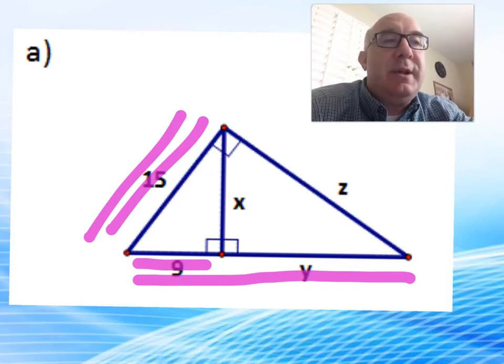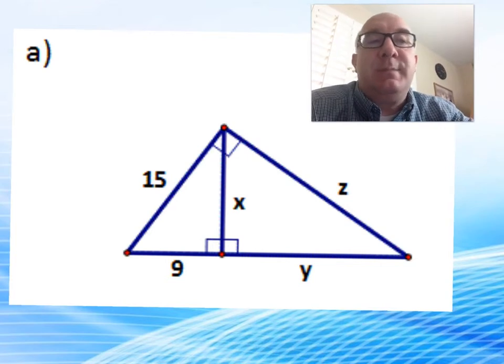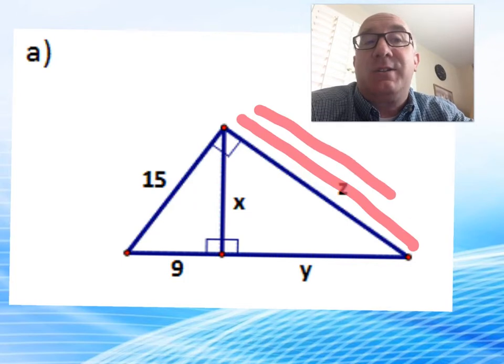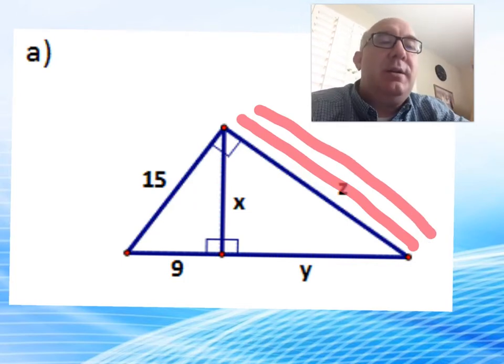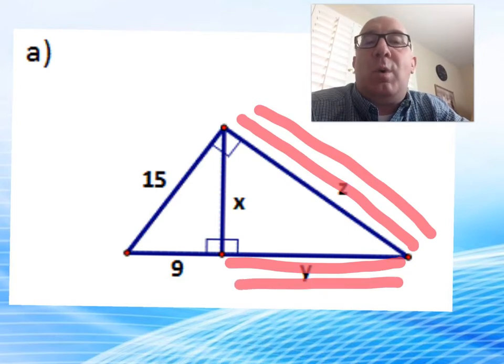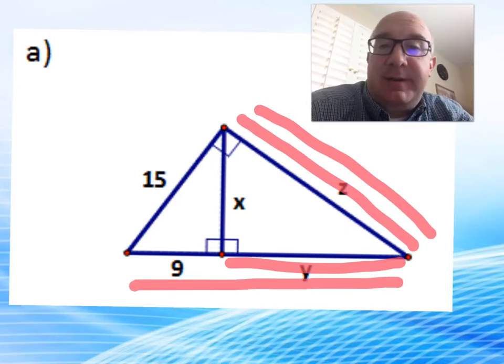The next geometric mean would be a similar one, but on the opposite side of the triangle. This side squared, z squared, would equal y times y plus 9. This one's got some trouble because there's a lot of variables in it.